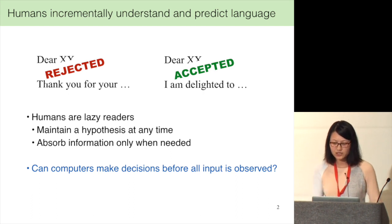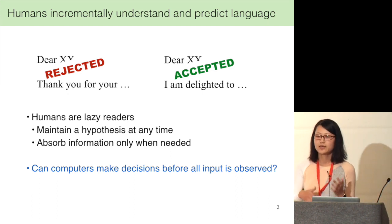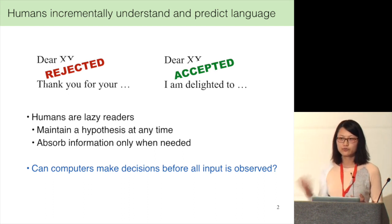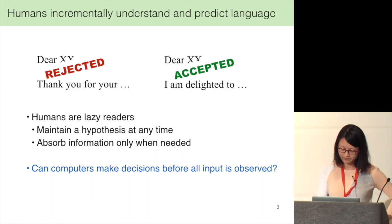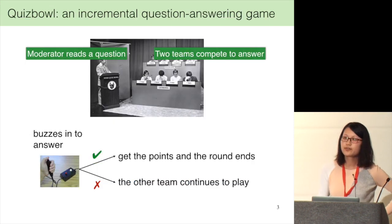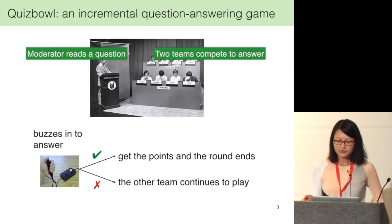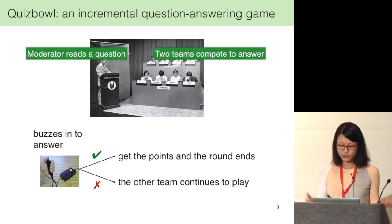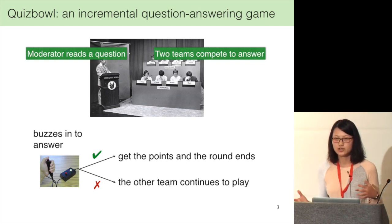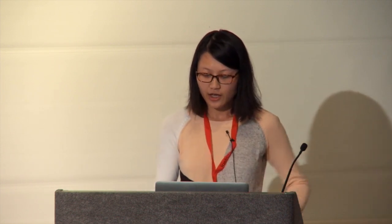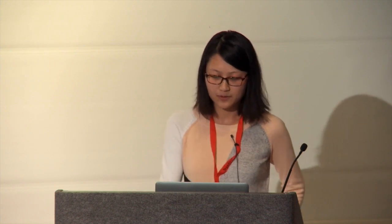Our goal is to build computer systems that can make predictions and decisions before all inputs are gathered. One such fun application is quiz bowl. If you're not familiar with the game, the moderator reads a question and two teams compete to answer, often before the question is finished. To answer, they need to buzz in first. If they give a correct answer, they get the points; otherwise the moderator continues reading and the other team gets to play.